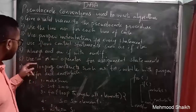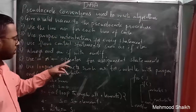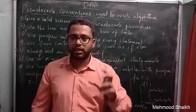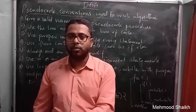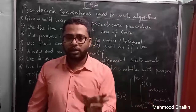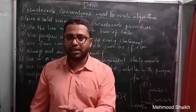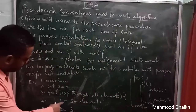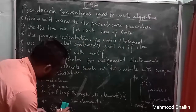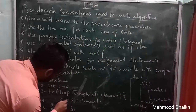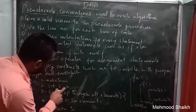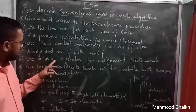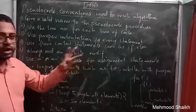The next convention is: use the equal sign or arrow operator for assignment statements. Whenever you are making calculations in your algorithm, where you are assigning the value of one variable to another or making a sum and assigning it to a variable, you can use the equal sign or in place of equal you can use an arrow symbol as well.